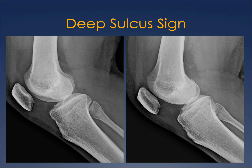Another subtle finding of ACL injury is the deep sulcus sign. On the left image, there is depression of the lateral sulcus terminalis of the femur, which you don't see on the right. This is a subtle finding, and comparative views are helpful. Sometimes the finding can be seen on both sides, so don't rely solely on this — but it's a good clue that something could be wrong with the ACL.